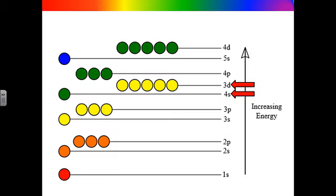One question you might have is why don't the electrons fill all the sublevels on an energy level before moving to the next energy level? For example, why is the 3d sublevel filled after the 4s sublevel? Notice on the energy diagram that it takes less energy for an electron to be in the 4s orbital than the 3d orbital. The Aufbau principle states that electrons fill the orbitals of lower energy first, so the 4s is typically filled before the 3d.